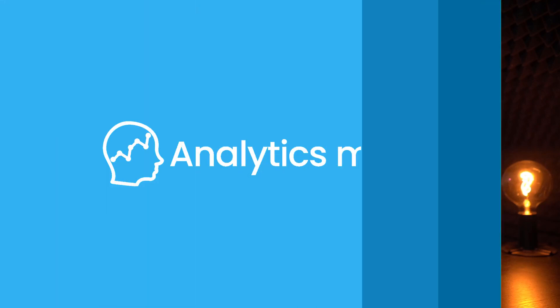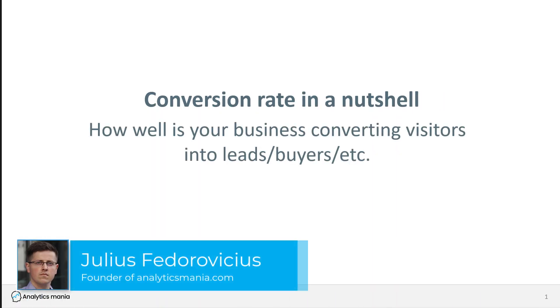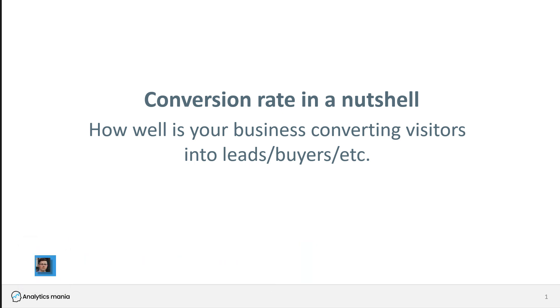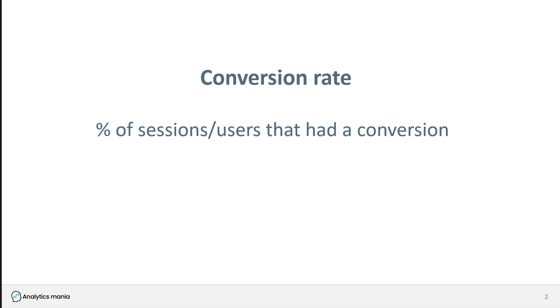There's one important change compared to the previous version of Google Analytics. In a nutshell, conversion rate basically shows you how well your business, website, or application is converting visitors into leads, buyers, or something else. Basically, it is a percentage of sessions or users that had a conversion — some important action such as a purchase, subscribing to a newsletter, or something else.